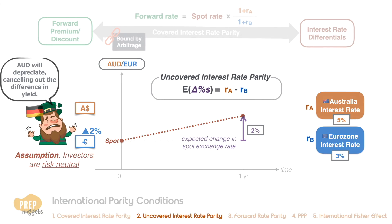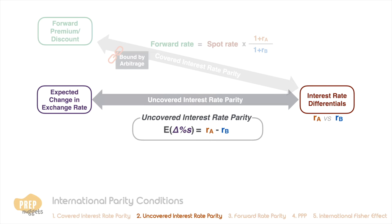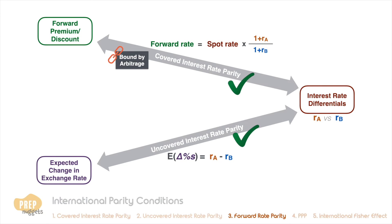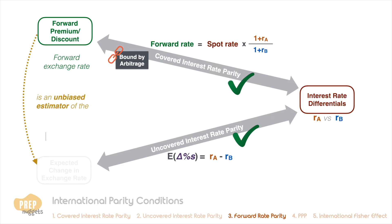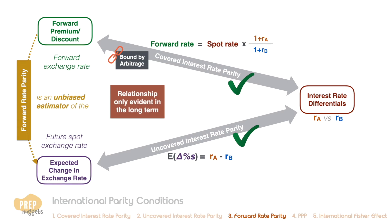Uncovered interest rate parity is another condition that governs interest rate differentials between two countries and the future exchange rate between their currencies — in this case, through the expectation of change in exchange rate. In theory, if both covered and uncovered interest rate parity hold, the forward exchange rate will be an unbiased forecast of the future spot exchange rate. This condition is often referred to as forward rate parity.